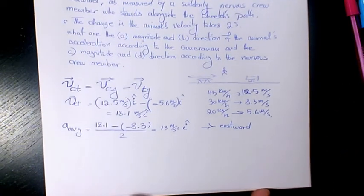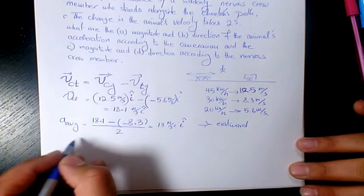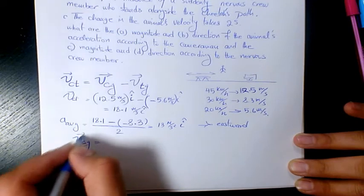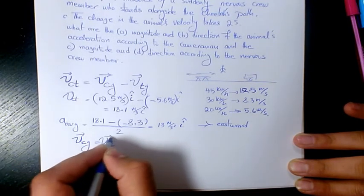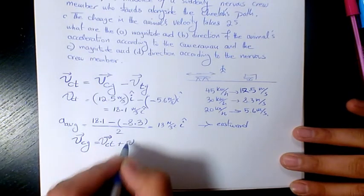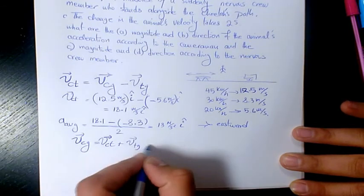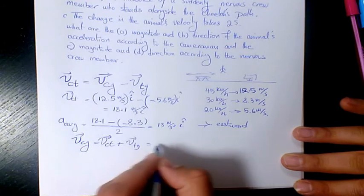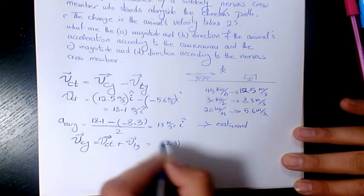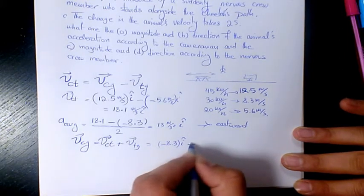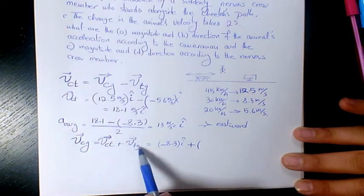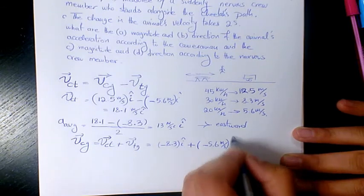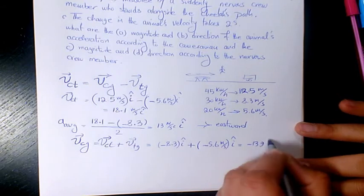Now let's do parts C and D: magnitude and direction according to the nervous crew member who is standing. The velocity of the cheetah with respect to the ground equals the velocity of the cheetah with respect to the truck plus the velocity of the truck with respect to the ground. Both are initially westward: −8.3 m/s î plus −5.6 m/s î, giving a total initial velocity of −13.9 m/s î toward west.